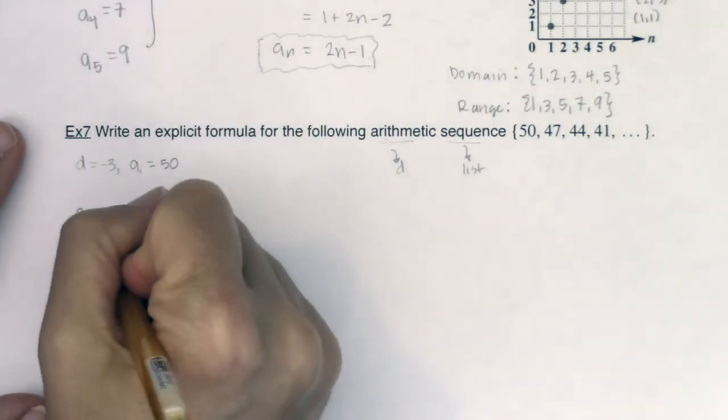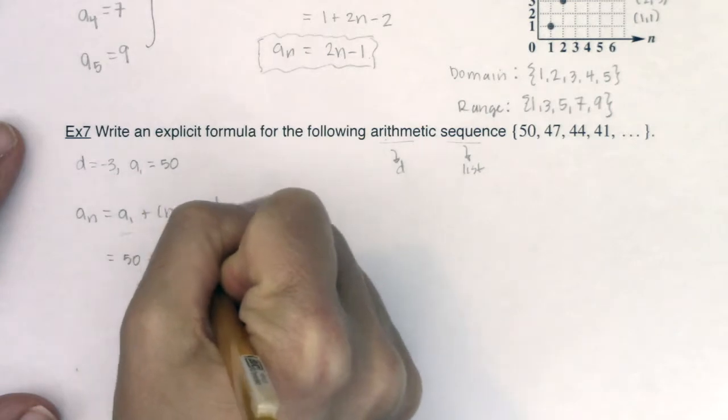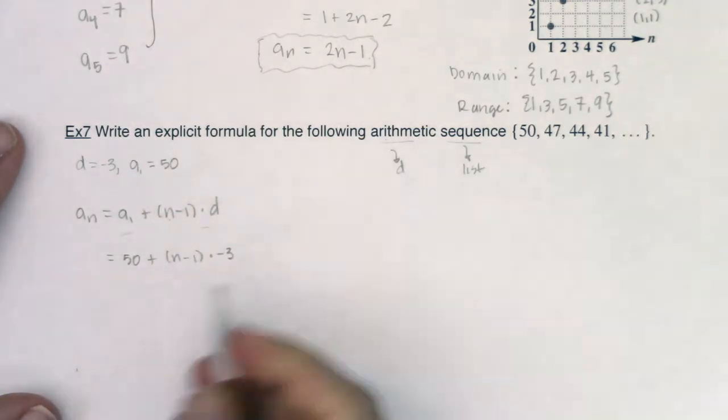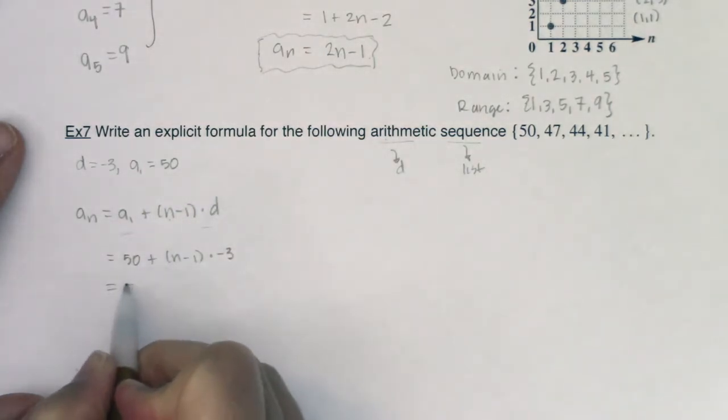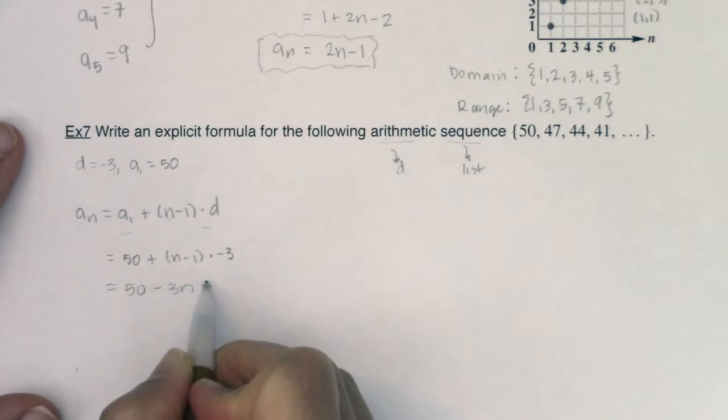So let's plug these in. So I would get 50 here, plus n minus 1 times negative 3. Let me go ahead and distribute. This would be 50. All right, negative 3 times n is negative 3n. Negative 3 times negative 1 is positive 3.